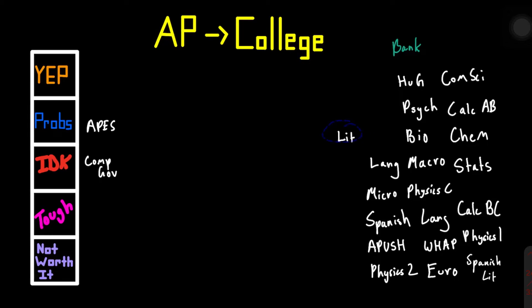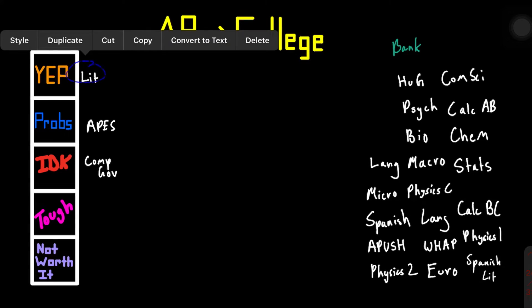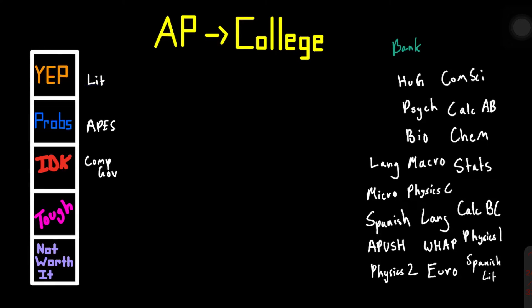Now, AP LIT is a yup. Every single college would want your LIT credit. It's an essential part of a liberal arts education, which is what most U.S. universities are founded upon. LANG can be replaced with your SAT or your ACT score usually. But it's still an essential if you don't have those. So we're going to say it's a yup.